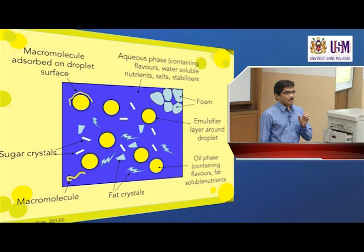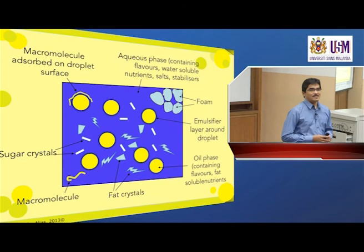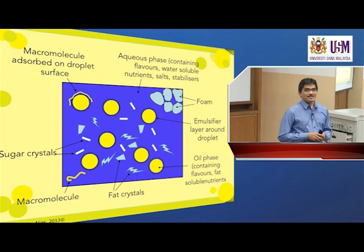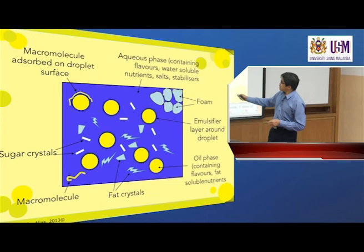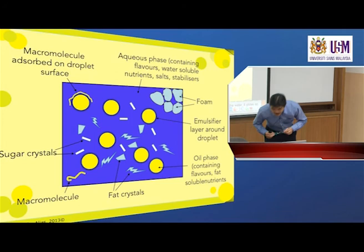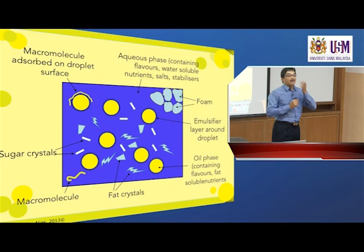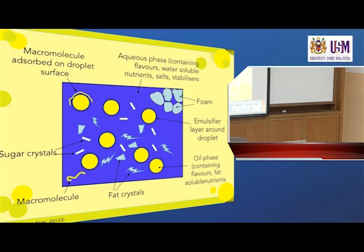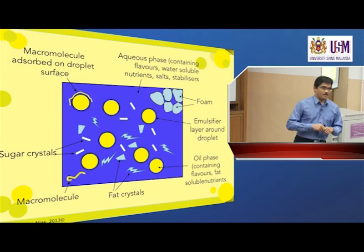What do we have here? Can anyone describe what is meant by a complex disperse system, using ice cream as an example? What are the ingredients in ice cream? We have milk fat, water, sugar, oil — well, the fat itself — flavor, and color.